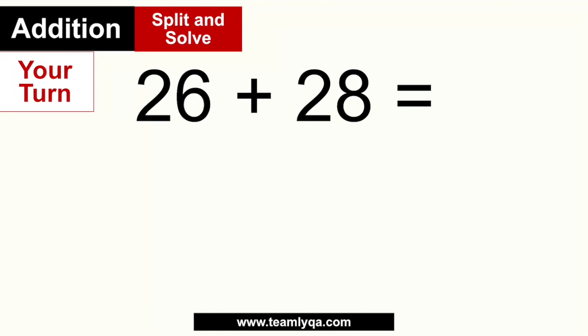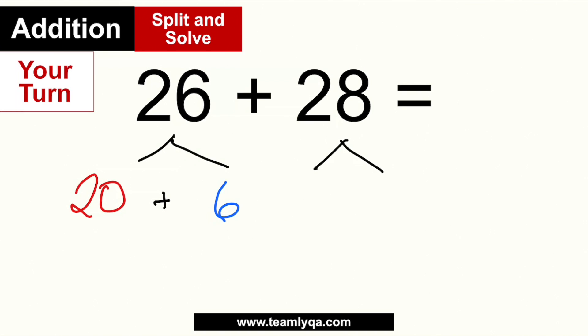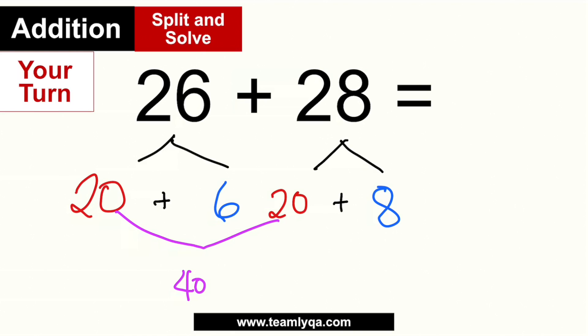We have 26 and 28. To split these into tens and ones: 26 is 20 and 6, and 28 is 20 and 8. The more you use this technique, the faster you'll get — you can eventually just look at the numbers and get the answer. Now putting the tens together: 20 plus 20 gives us 40, and 6 plus 8 gives us 14.